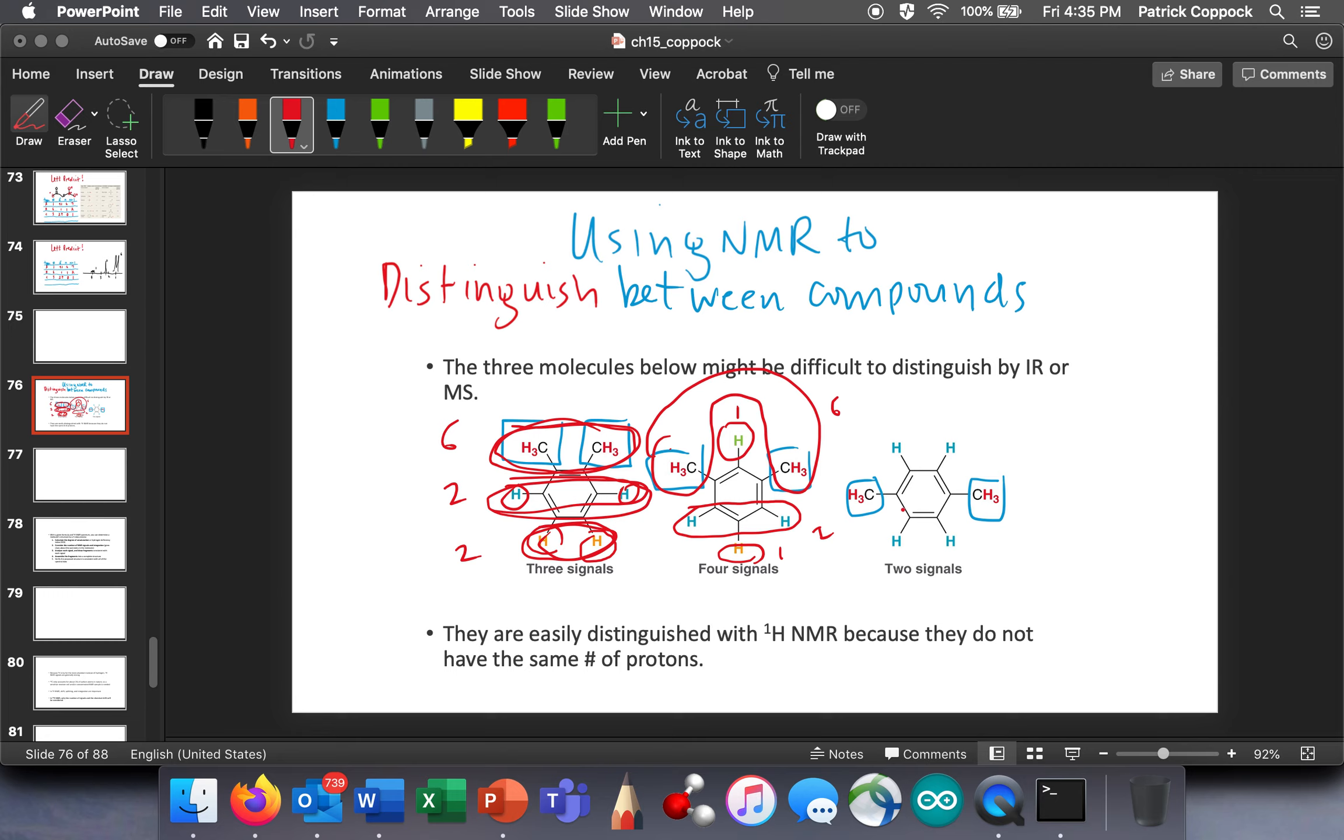And on para-xylene, there's only two because look at these guys are right here. And these four are all the same. So there's four in that and six in this. So let me get rid of those so you can look at those xylene molecules again.